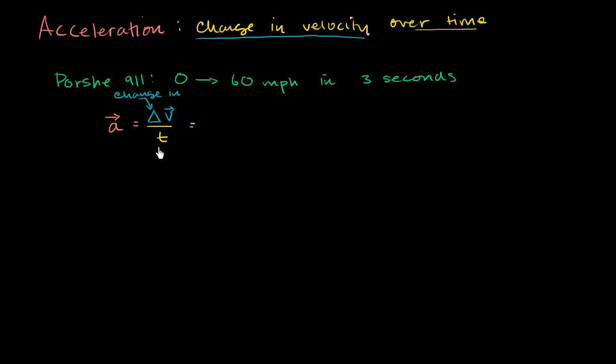So what's our change in velocity? Our final velocity is 60 miles per hour, and our original velocity was 0 miles per hour. So it's 60 minus 0 miles per hour. And then what is our time? Our change in time is 3 seconds.